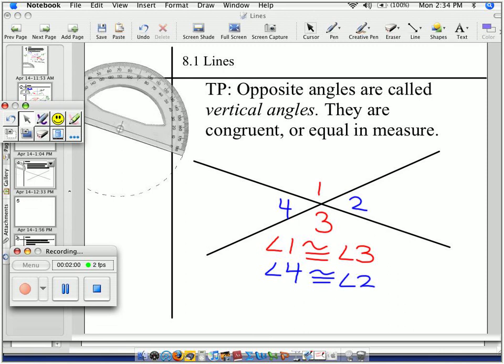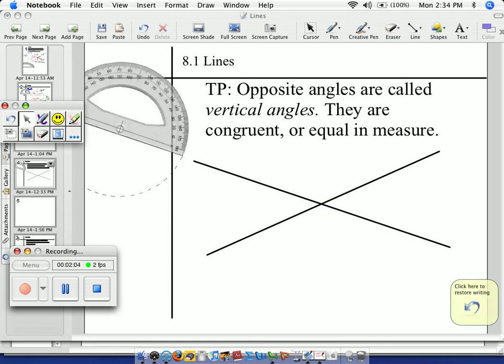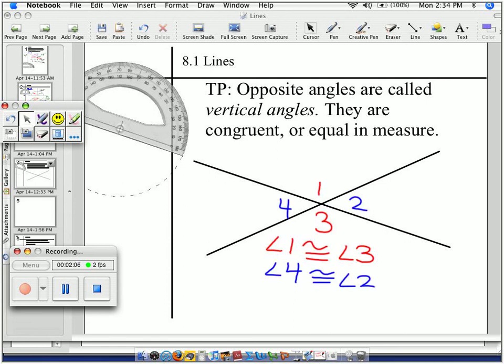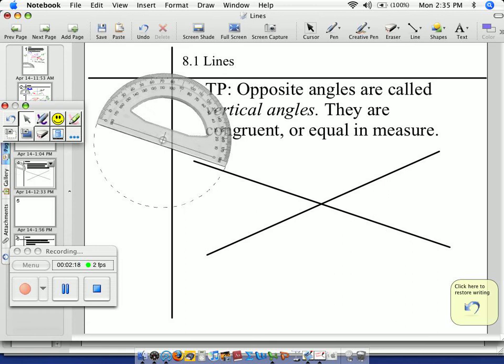What this means is they are equal in measure. So here's my protractor. Oh, no. Okay, I don't know how to do this. But when I use my protractor to measure, angle one is going to be equal to angle three. So this is going to disappear. I'm sorry about that, but that's just how it goes. Here we go.